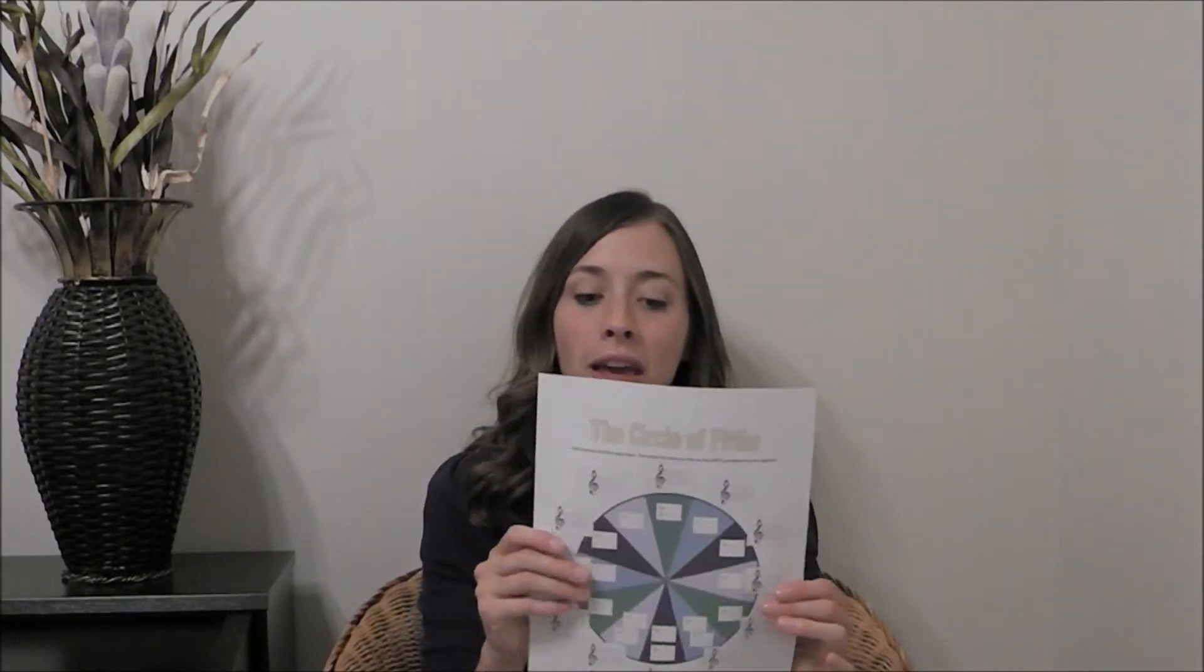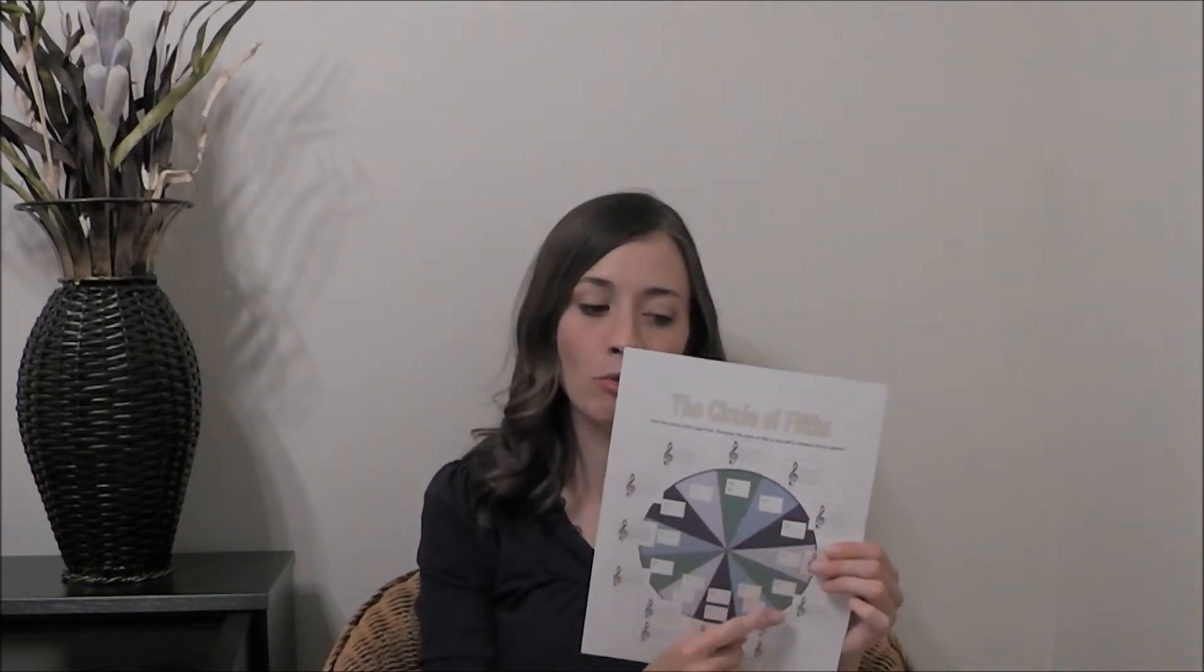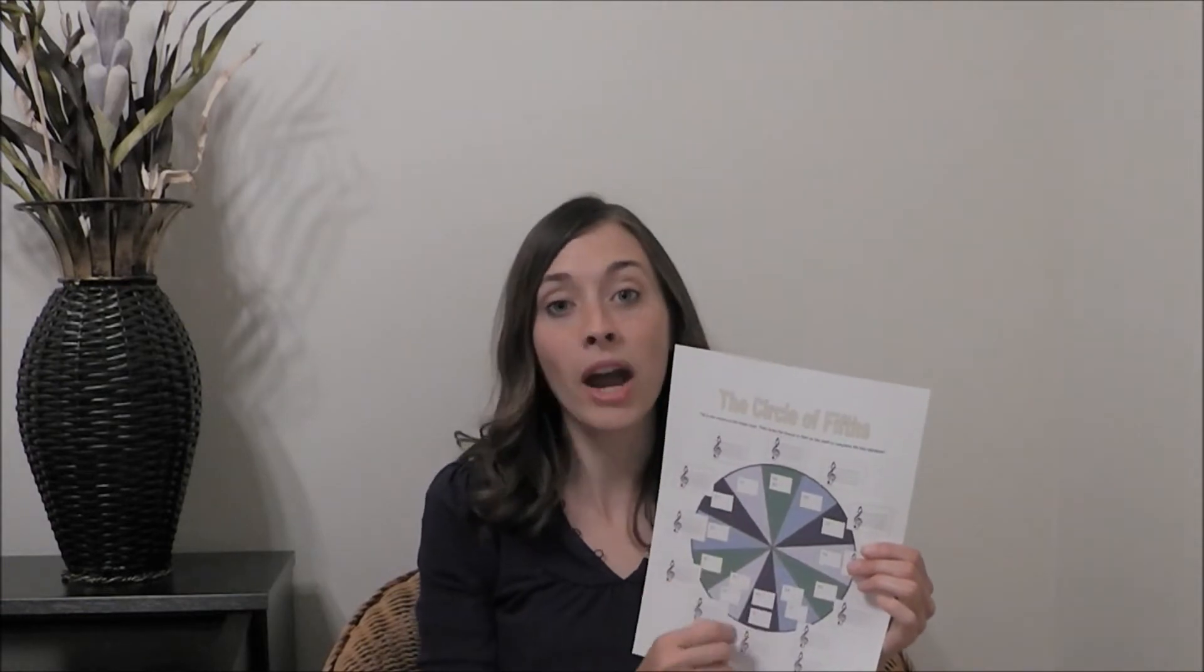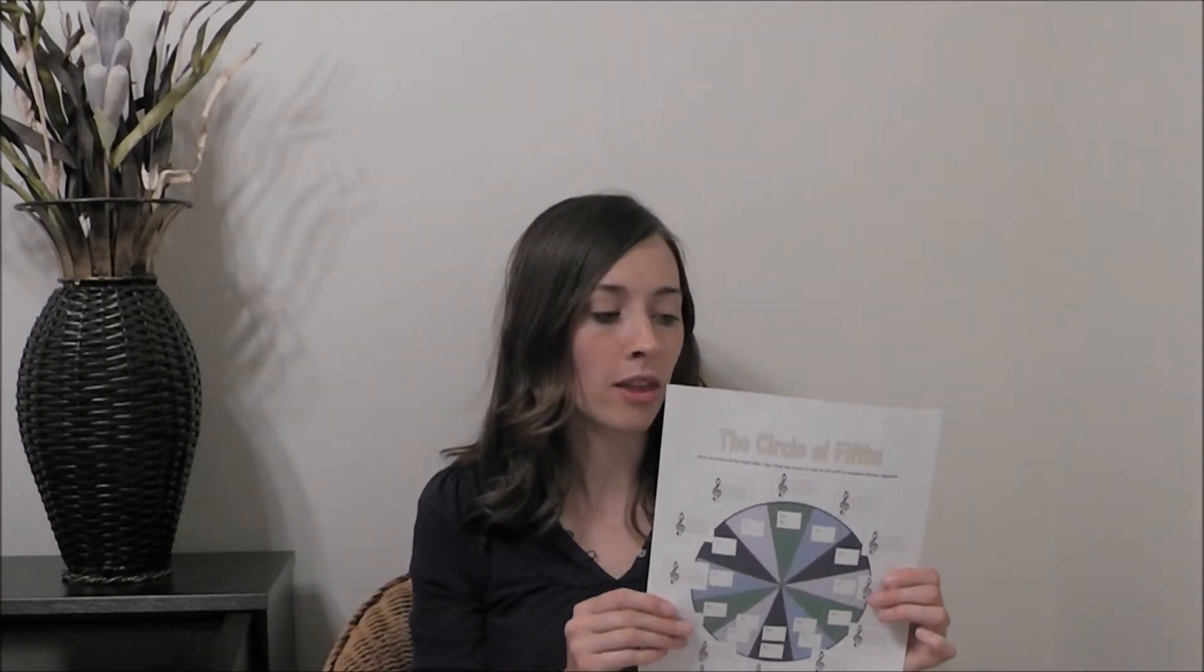This worksheet I really like a lot. Similar to the other one where you write the name of the key in the box here, but it also includes a space where you can write the sharps and flats. Fill those in to practice writing that key signature. That way you can learn how to write them correctly, writing each one on the correct line or space.